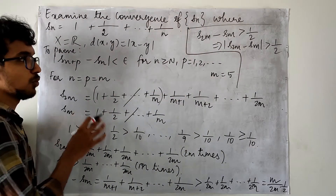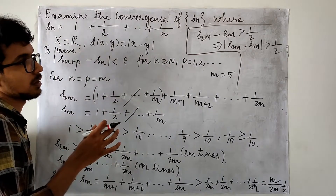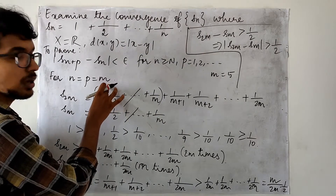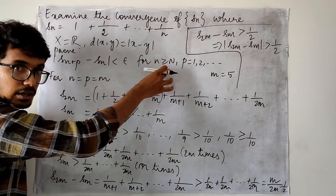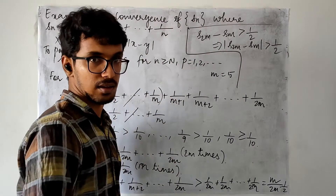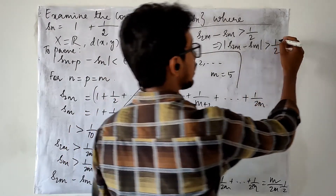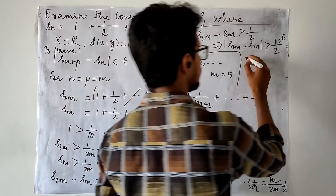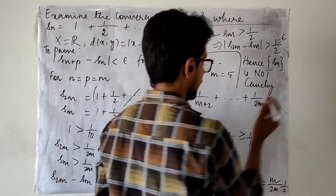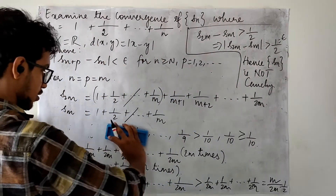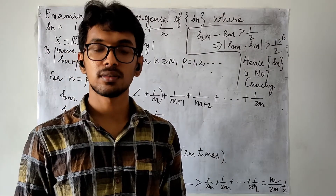In order to prove some sequence is Cauchy, whatever the value of epsilon, you must be able to identify some stage such that the condition holds. Here I have randomly picked some stage m, but I am getting |S(2m) minus Sm| > 1/2 regardless. Whatever epsilon you choose, if you choose epsilon to be 1/2, you are getting bigger than — hence Sn is not Cauchy. This proves the given sequence is not Cauchy and hence the given sequence is not convergent as well.